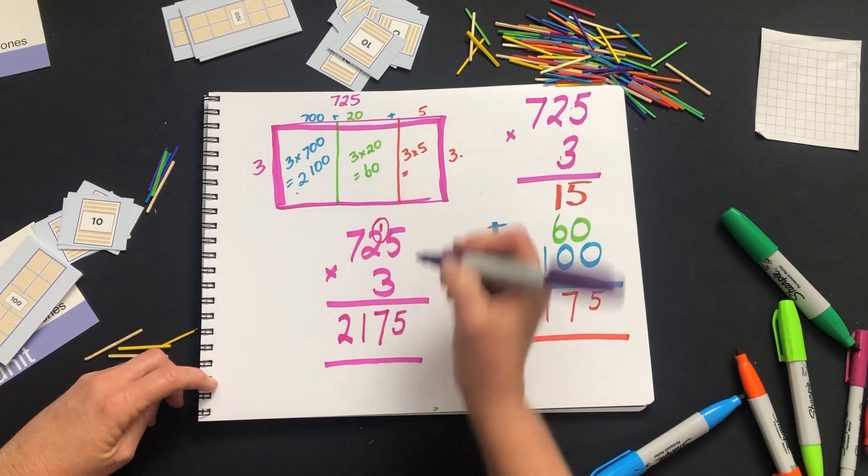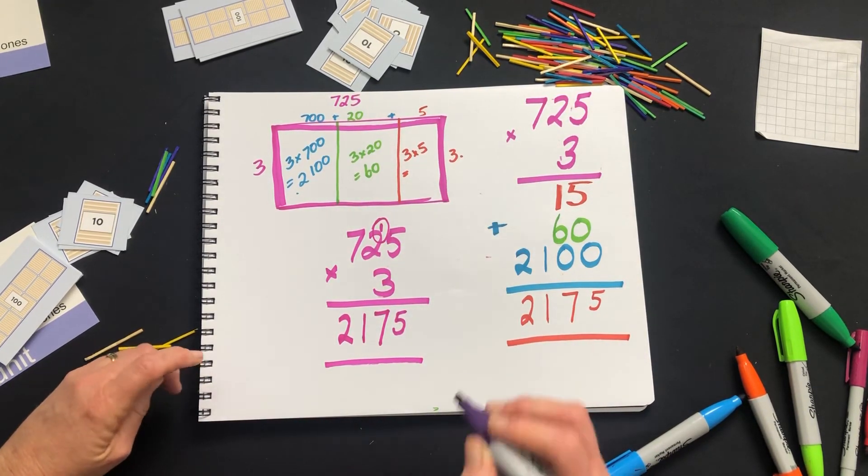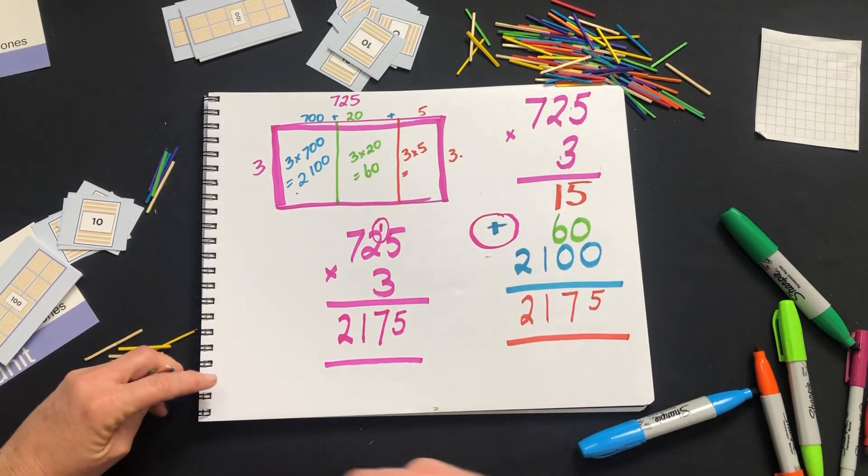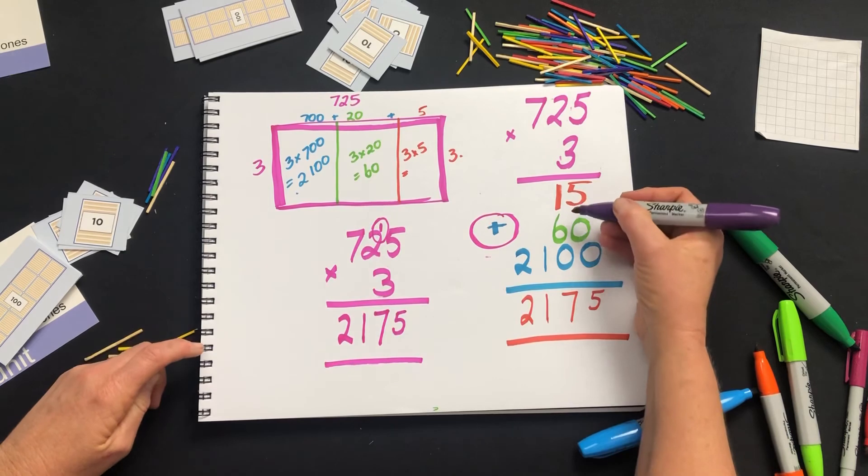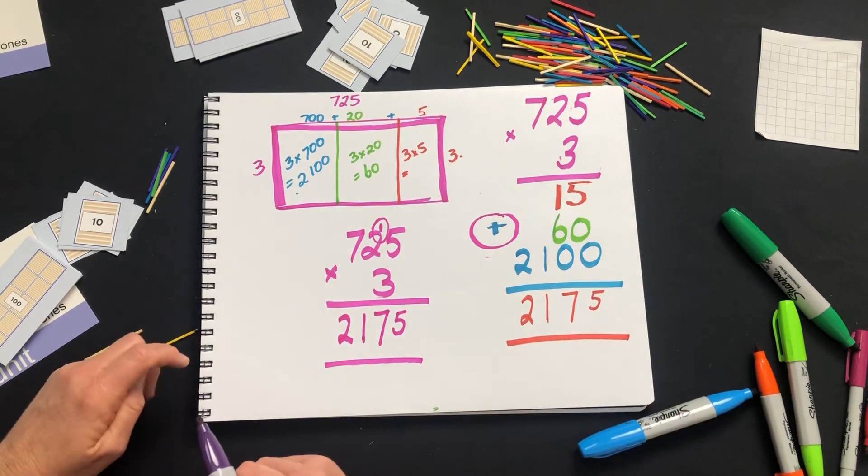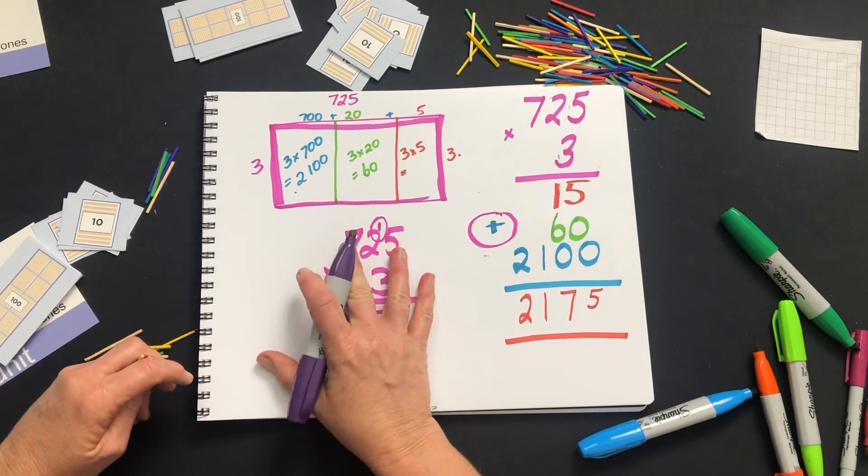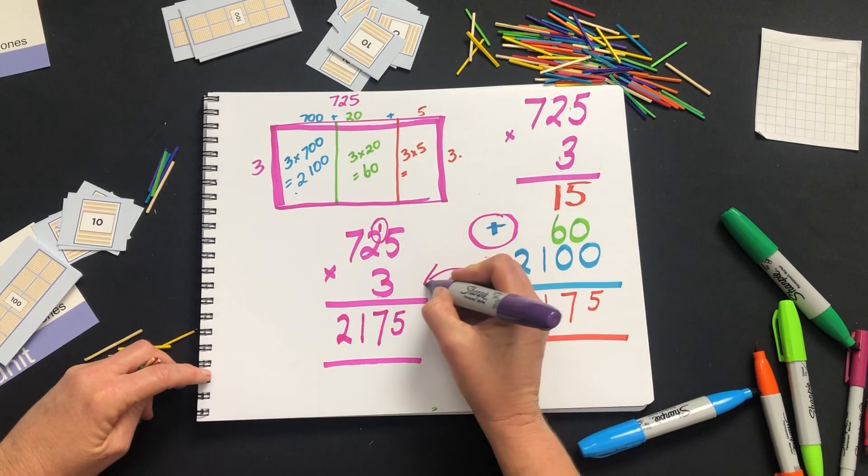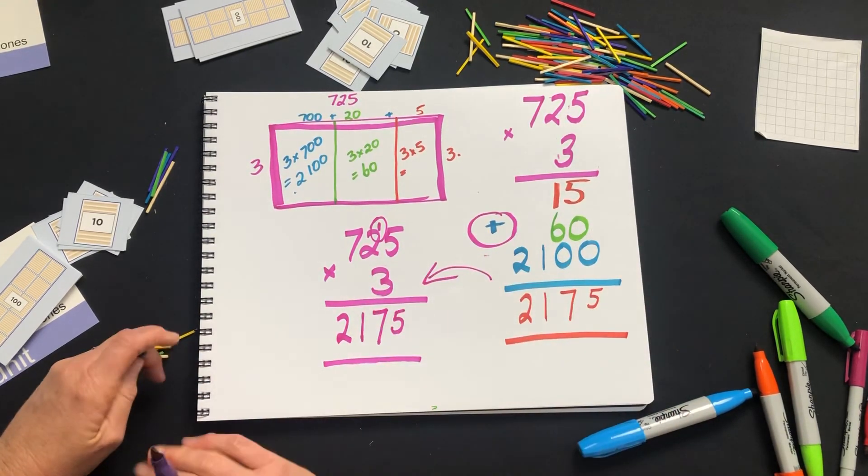But it's this notation that causes students confusion, and it's also the fact that we're multiplying and adding as we go. We're adding the 15 to the 60 to the 2100, and that's quite complicated. Start with this. Once they're confident, they can move to the shortcut.